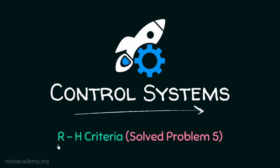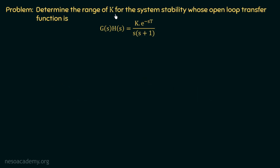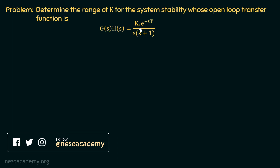In this presentation, we are going to discuss and solve problem 5 on RH criteria. Determine the range of k for the system stability, whose open loop transfer function GSH is equal to k multiplied with e to the power minus st over s multiplied with s plus 1. We are given an open loop transfer function GSH and we need to find out the range of k for the system stability. We'll be applying the RH criteria in order to find out the range of values of k for the system to be stable.